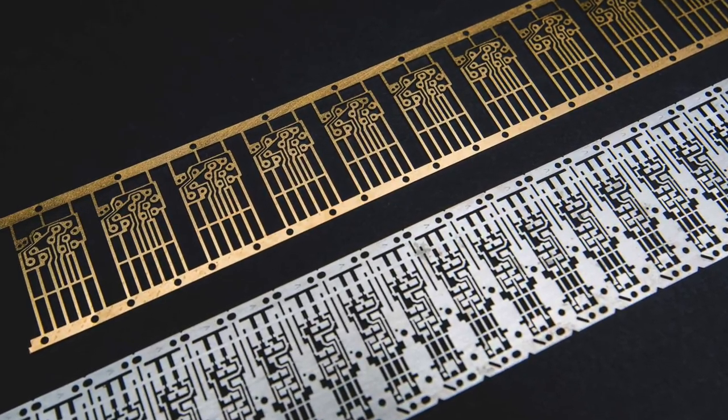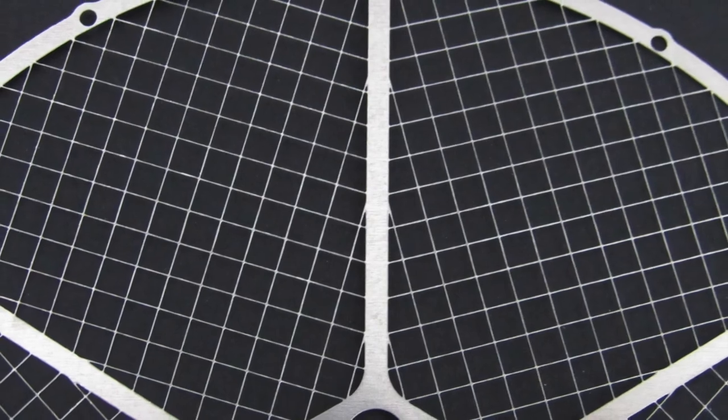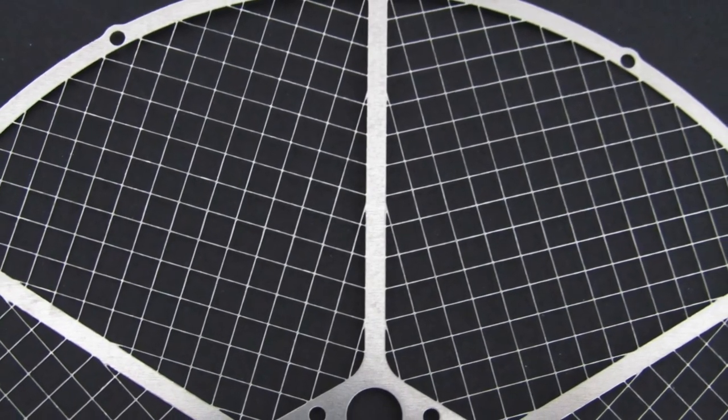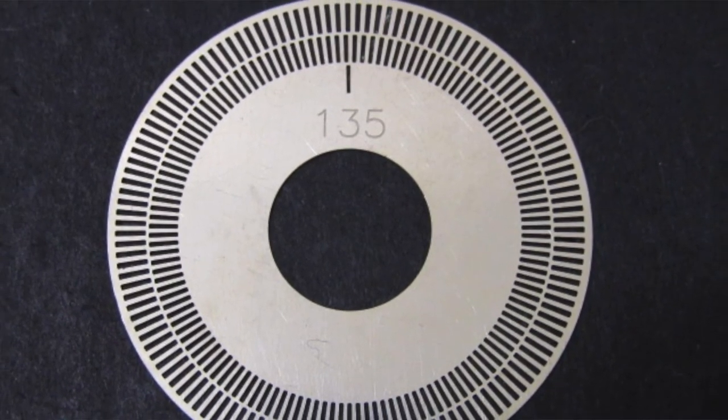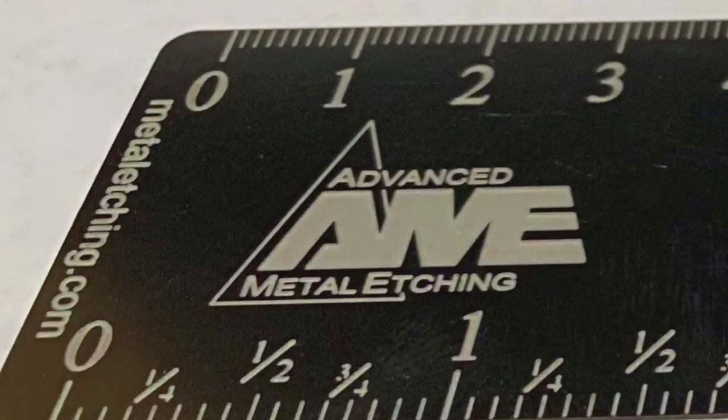Parts with numerous holes, slots, or other unique features etch simultaneously, saving time and money. Company logos, part numbers, or other identifying features are also etched at no additional cost.